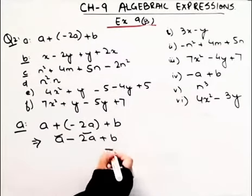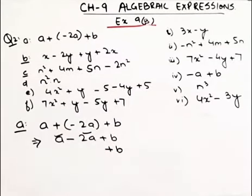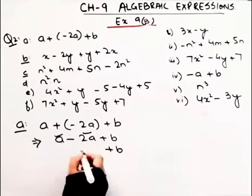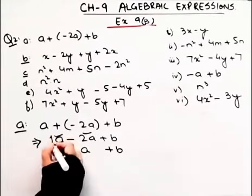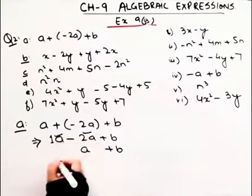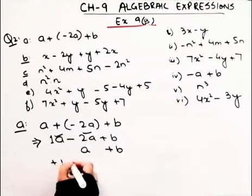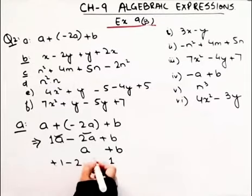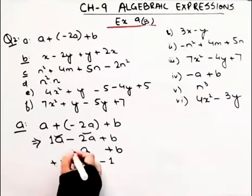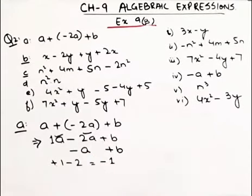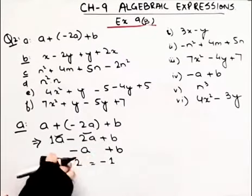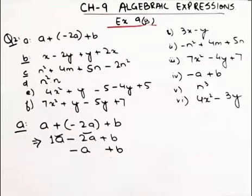These two are like terms. So I'll write plus B as it is. For the A terms: 1 minus 2 — what will that be? 2 minus 1 is 1, and the sign will be negative, so that gives us minus A.